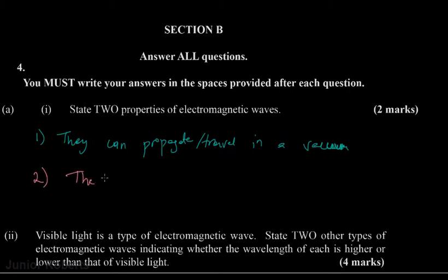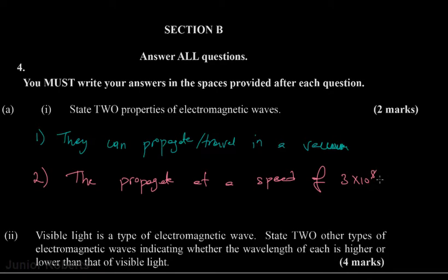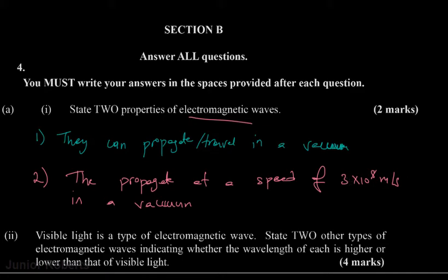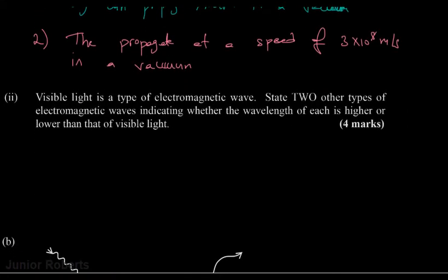The second property is that they propagate at a speed of 3×10⁸ meters per second in a vacuum. We could also include that they are transverse waves, among many other properties, but we'll list these two: they propagate in a vacuum and travel at 3×10⁸ m/s.